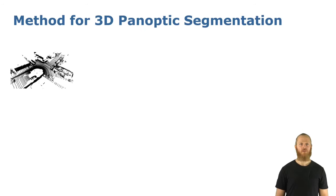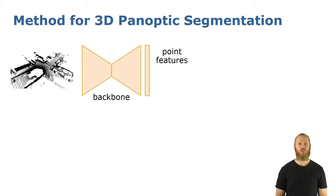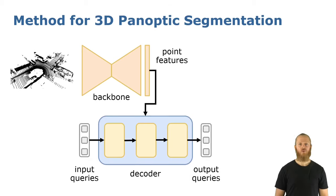To perform 3D panoptic segmentation, we start from the input scan and use an encoder-decoder architecture with sparse convolutions to extract point-wise features. We use a set of learnable queries, which are learnable feature vectors, as mask proposals. We refine these queries in a transformer decoder through cross-attention and self-attention, combining this way the queries with the point features we extracted earlier.